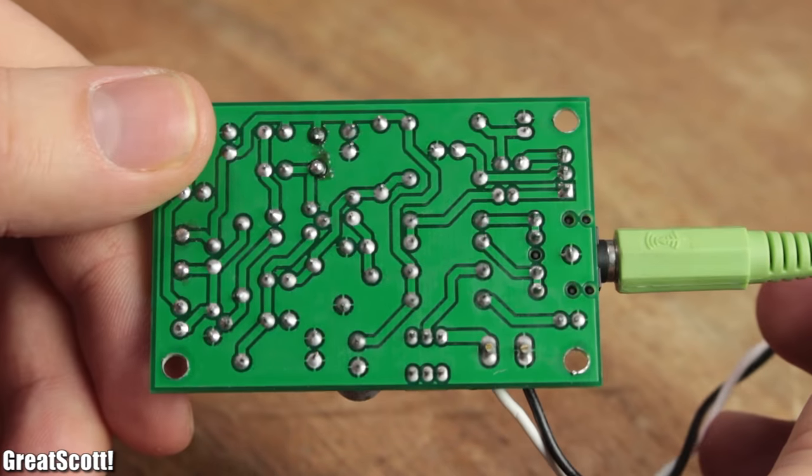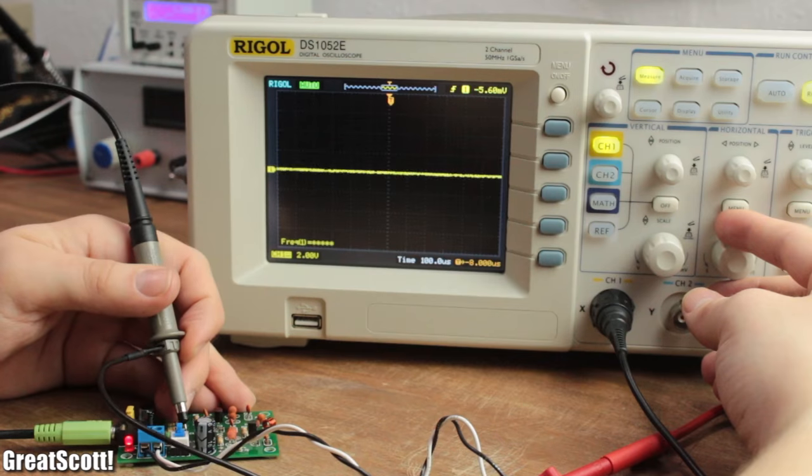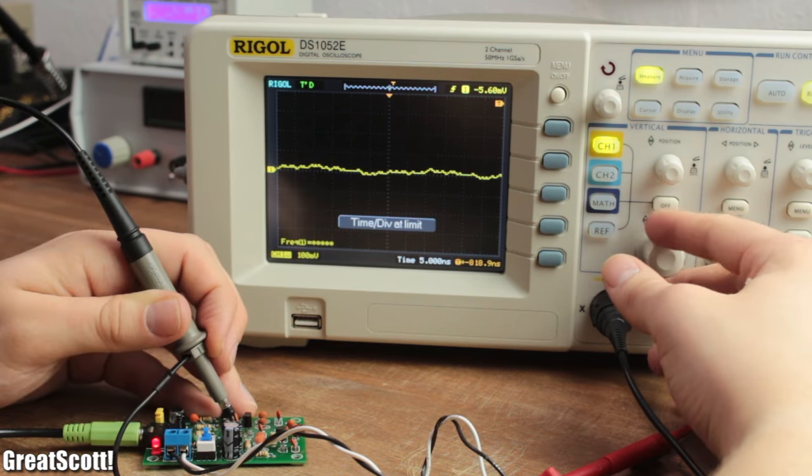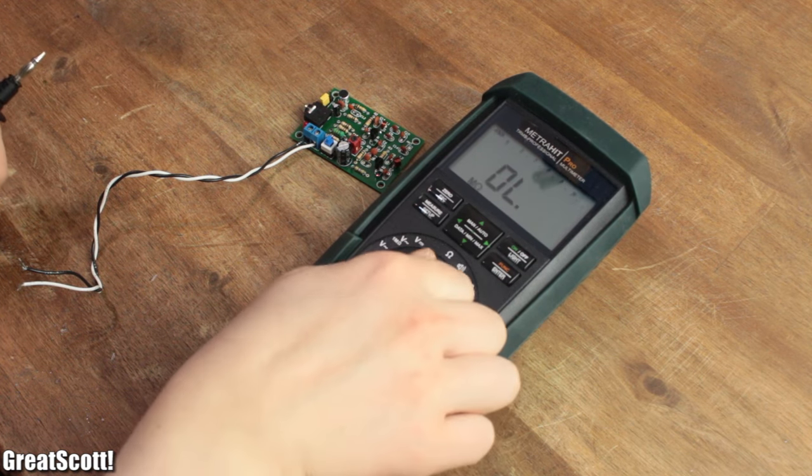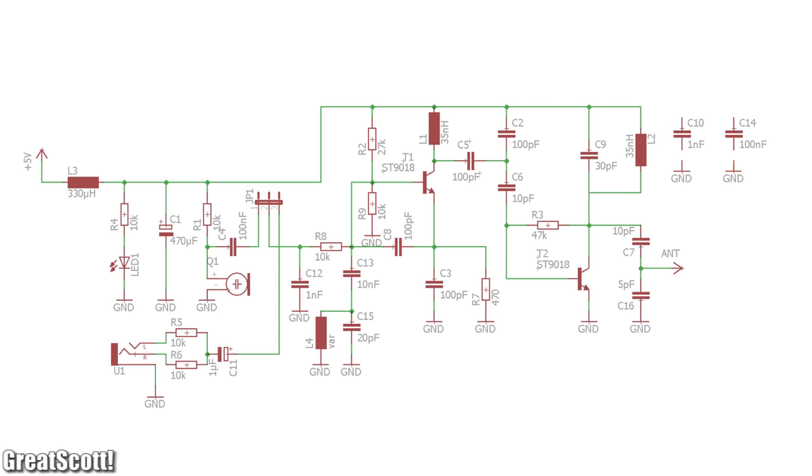First off, we need to take a closer look at the FM transmitter circuit. And because probing several components with my oscilloscope did not clarify the function principle at all, I went ahead and used my multimeter with its continuity function to create the schematic of the circuit.